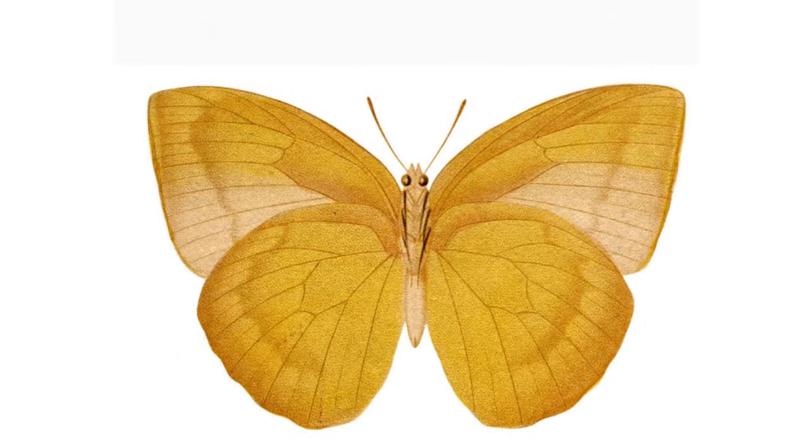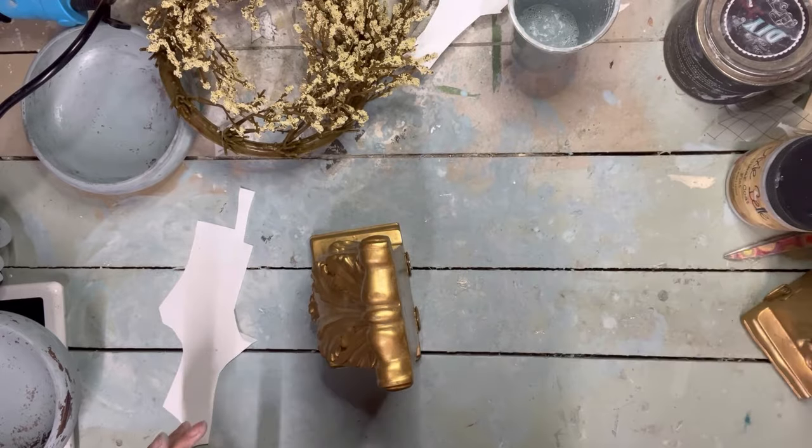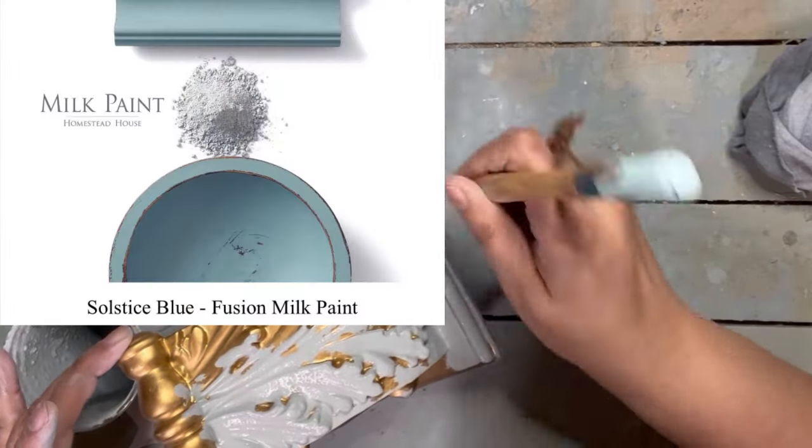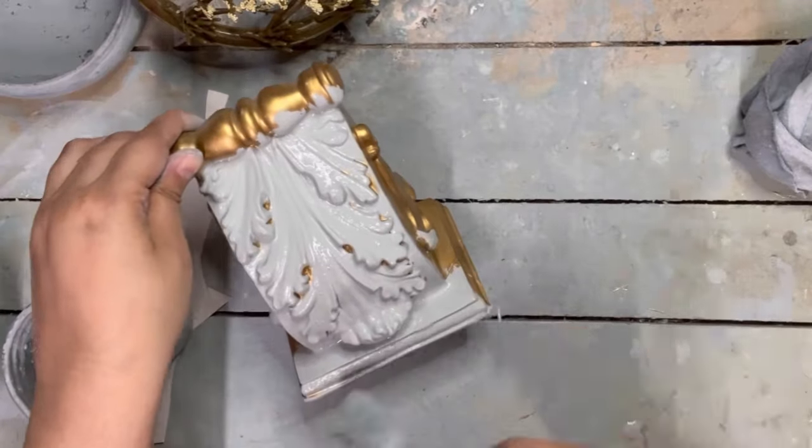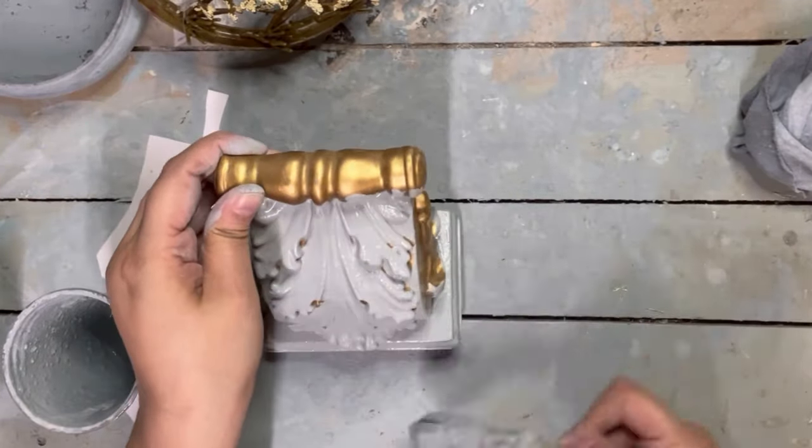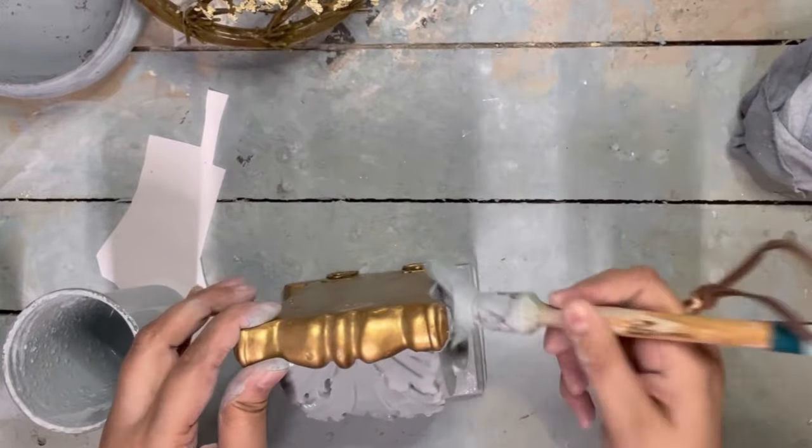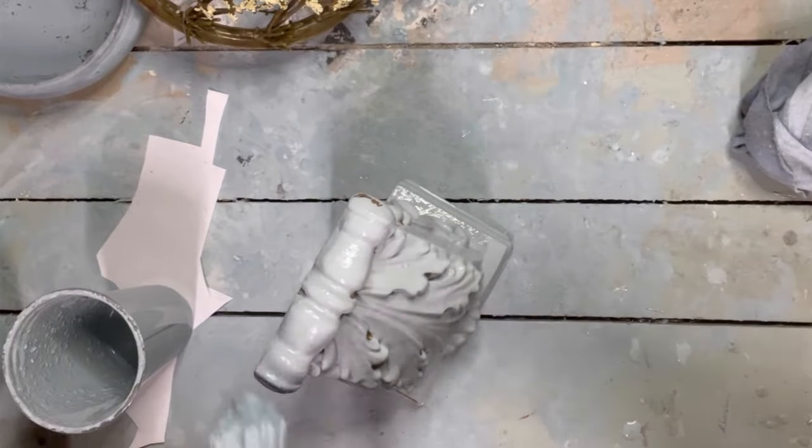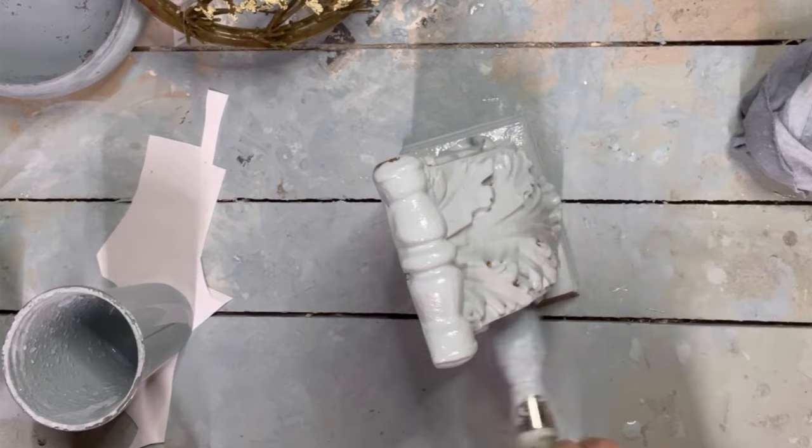Moving on to project number two, I have these really heavy bookcase or bookends here. I'm gonna come in back with that Milk Fusion milk paint in Solstice Blue and we're going to repeat the same process here of layering and heat gunning, layering and heat gunning to get that chunky thick look of layered paint and a chippy surface.